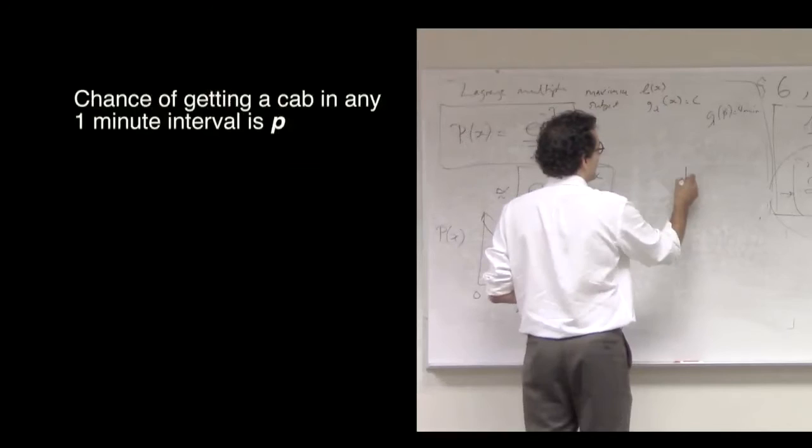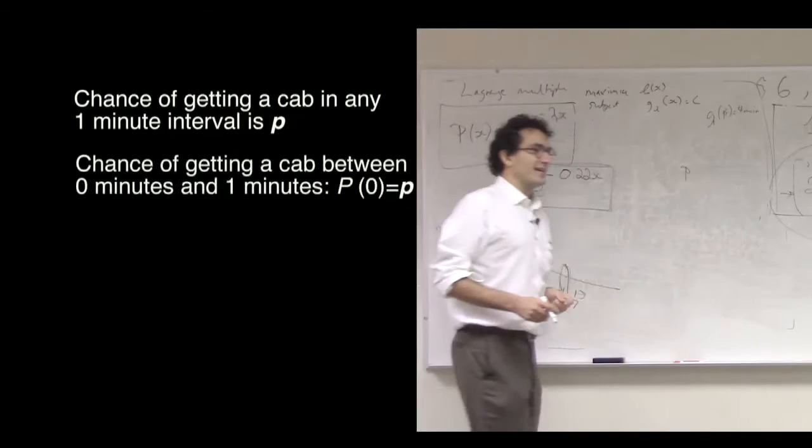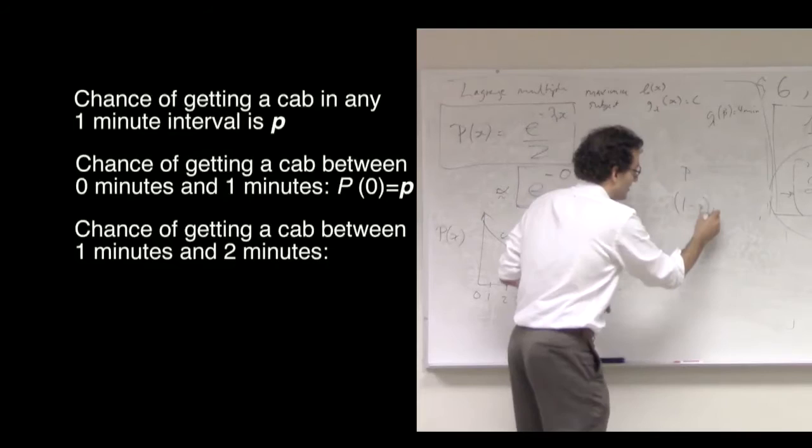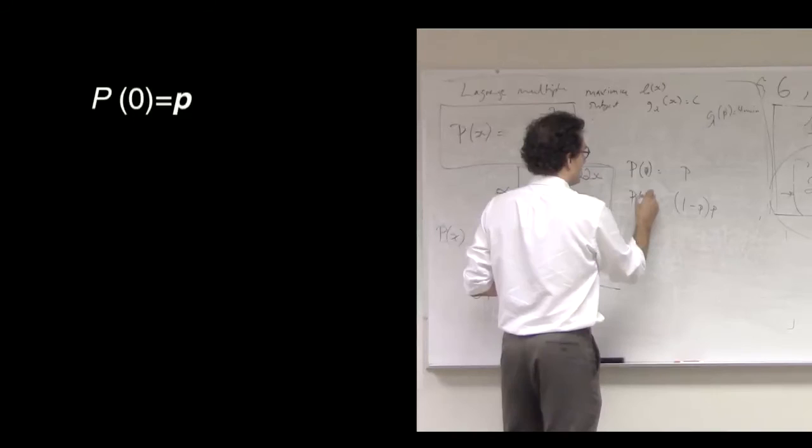Some number P. So that means the chance of you getting a cab between zero minutes and one minute is P. The chance of you getting a cab between one minute and two minutes, well, first of all, it's one minus P because you didn't get a cab that first minute. You got unlucky. And the chance that, having not gotten a cab in the first minute, you get a cab in the second minute, that's just P. So, P0 is P. The probability of getting a cab between zero and less than one minute is P. P1 is one minus P times P.